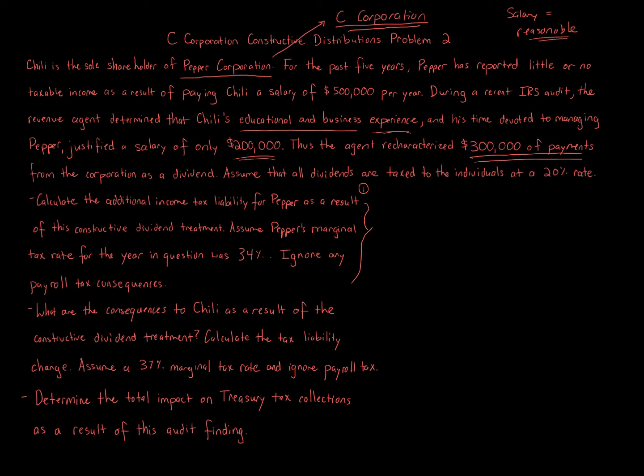The IRS says you need to pay us additional taxes, corporation, because you lowered your income by $300,000 and now it's going to be raised by $300,000. In question A, it's saying calculate the additional income tax liability for Pepper, the corporation, as a result of this constructive dividend. The idea here is we're increasing taxable income. How are we increasing taxable income? Because taxable income is gross income minus deductions.